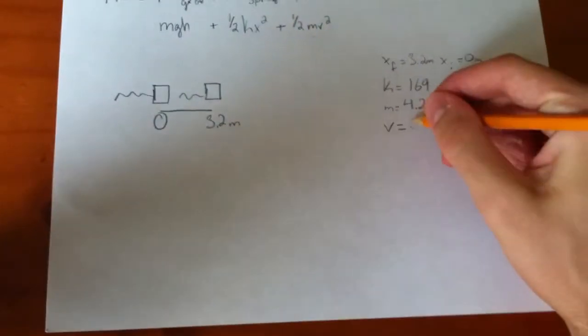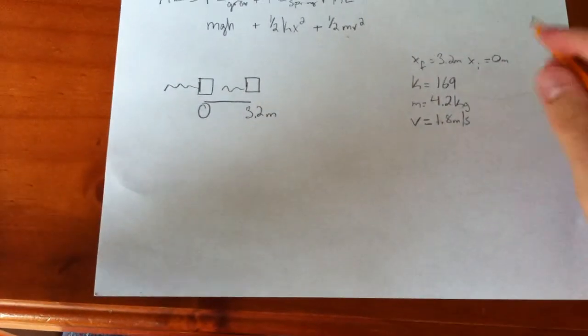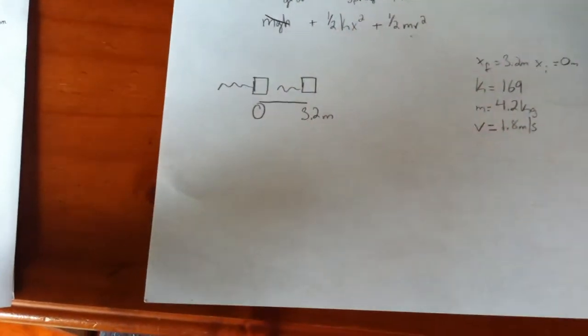Let's say it's 1.8 meters per second. Our height is zero, so this is neglected.